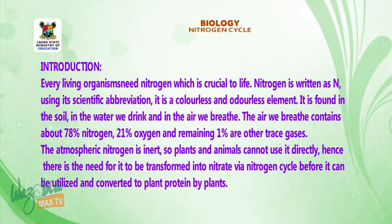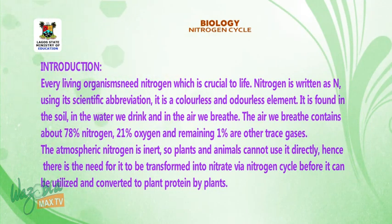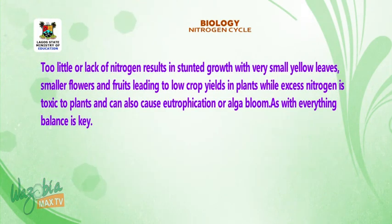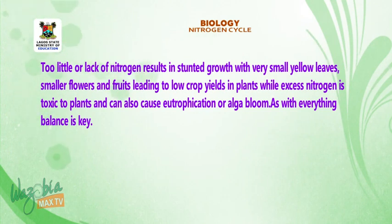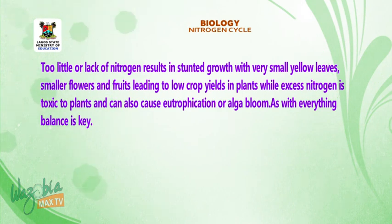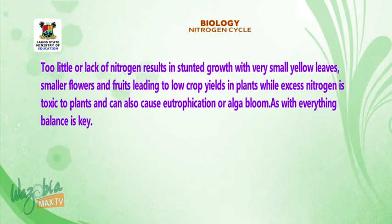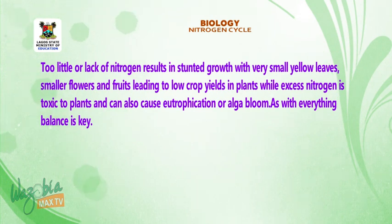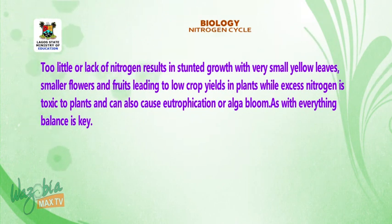Nitrogen must be transformed before it can be utilized and converted to plant protein by plants. Too little or lack of nitrogen results in stunted growth with very small yellow leaves, smaller flowers and fruits, leading to low crop yields in plants. While excess nitrogen is toxic to plants and can also cause eutrophication or algae bloom. As with everything, balance is key.